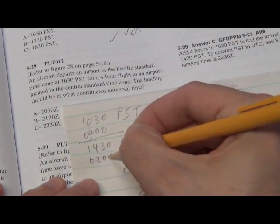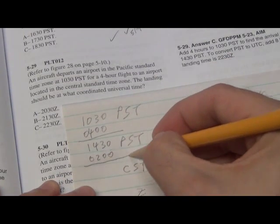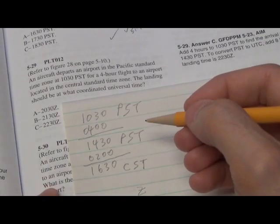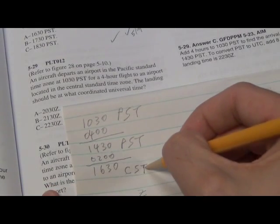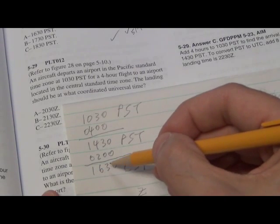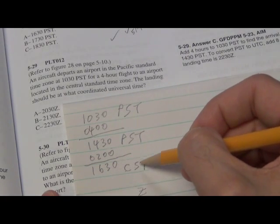Zero, two, zero, zero gives you one, six, three, zero Central Standard Time. So we know he landed Central Standard Time at one, six, three, zero Central Standard Time.